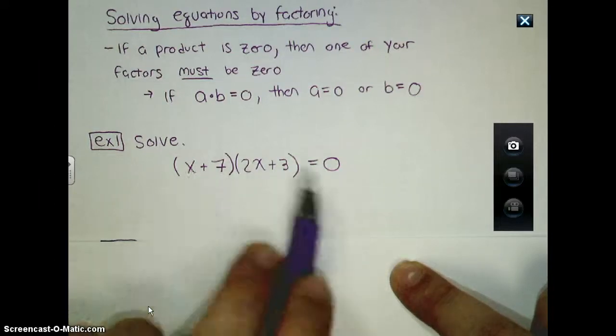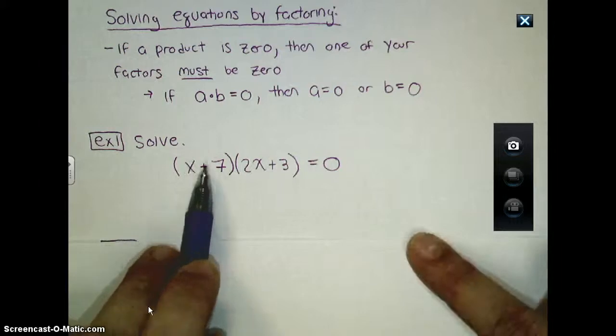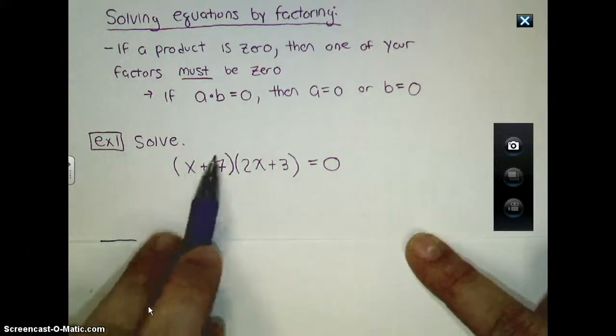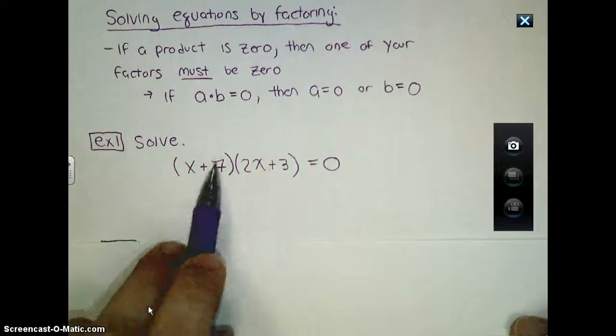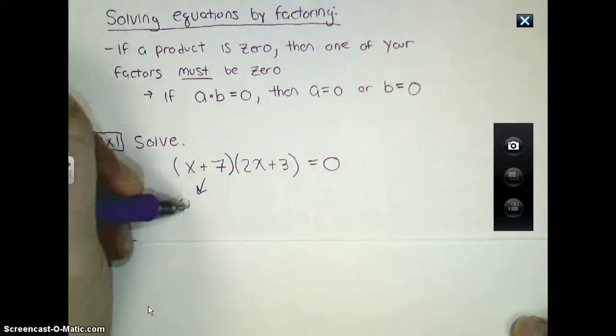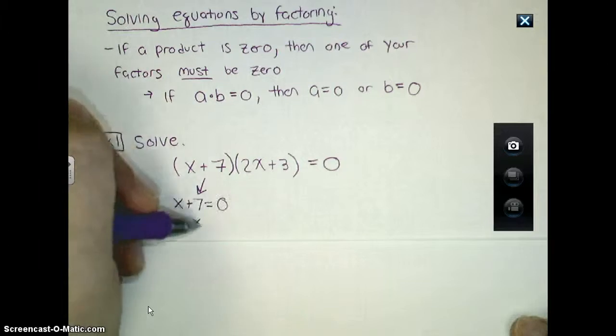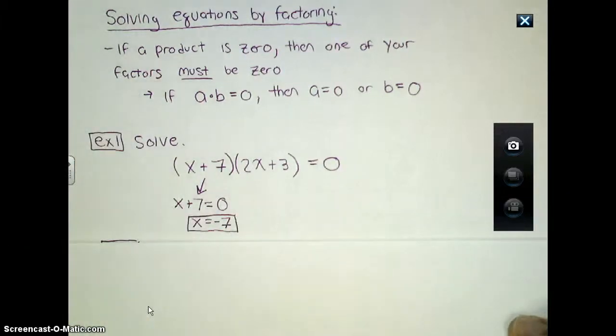X plus seven is my one factor. If this factor were ever to equal zero, then my whole equation would equal zero, because if this was, let's say, negative seven, negative seven plus seven is zero. And zero times whatever that thing is, it doesn't matter what it is, zero times whatever that is, is going to be zero. So we're going to take this factor and find out when this is equal to zero. And as I've already mentioned, we know this is going to be negative seven. So that's one solution here.